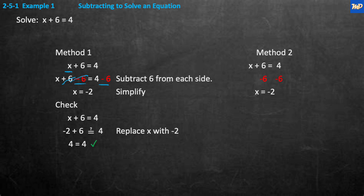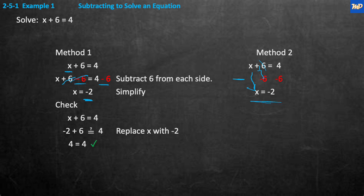To check, substitute negative 2 back in: negative 2 plus 6 equals 4. Yes, that's correct. The second method treats it like a vertical subtraction problem — bring down the x, the 6's cancel each other out, and 4 plus negative 6 equals negative 2. Same solution.